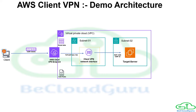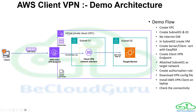Now let's walk through today's demo architecture. We're going to create a VPC with two subnets — Subnet 1 and Subnet 2 — and we are not going to create an internet gateway because we'll use the Client VPN endpoint for connectivity. In Subnet 2 we'll create a target Windows virtual machine, keeping RDP port 3389 and ICMP open.